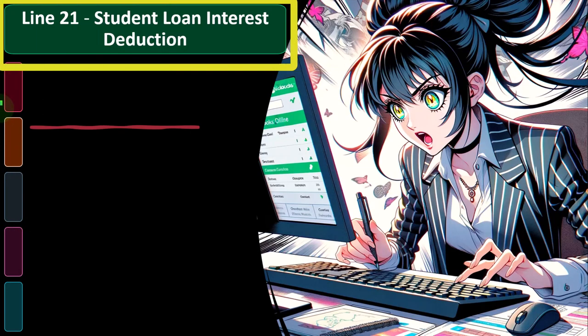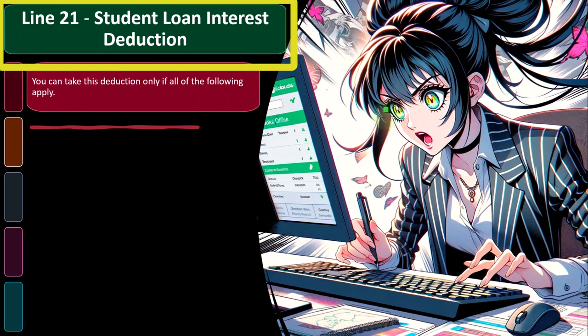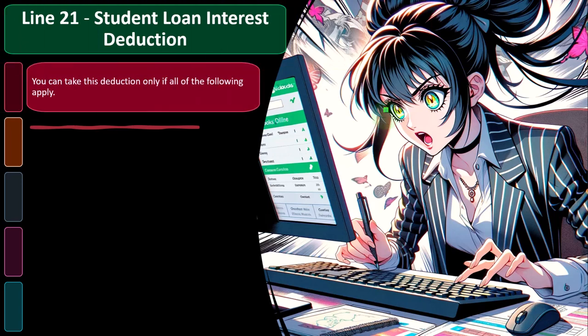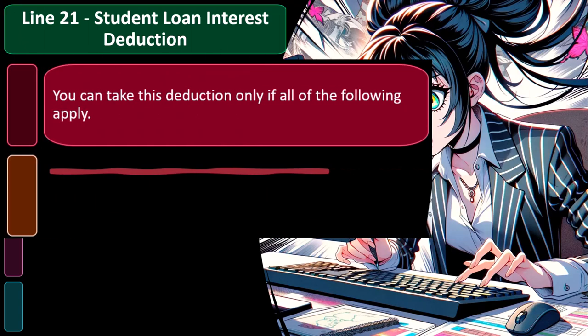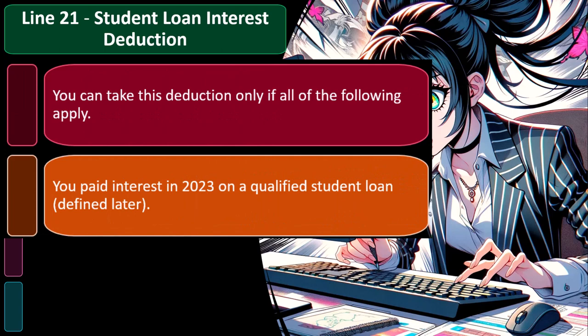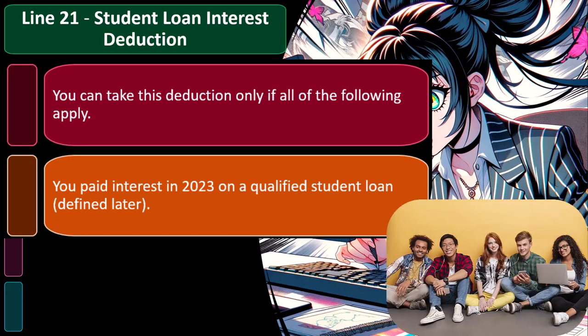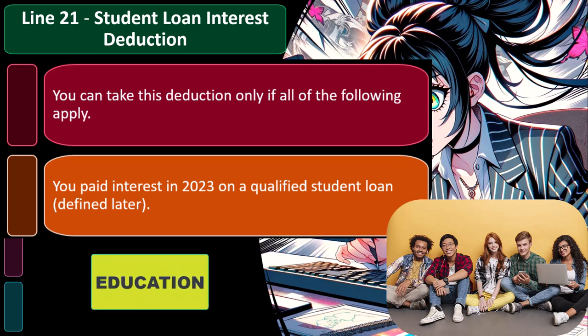Line 21, student loan interest deduction — you can take this deduction only if all of the following apply. You paid interest in 2023 on a qualified student loan. When we think about student loan interest, what is the government trying to do? Incentivize education. What actually happens is they end up subsidizing education, which increases the price of education.